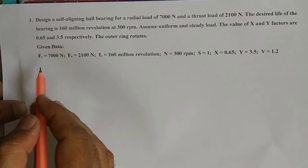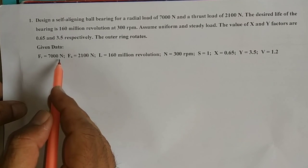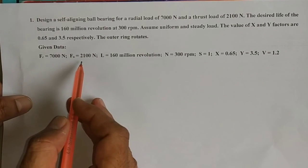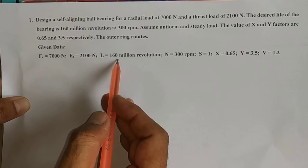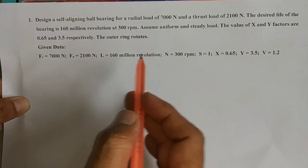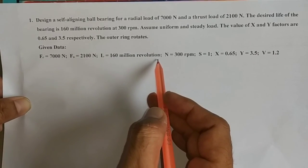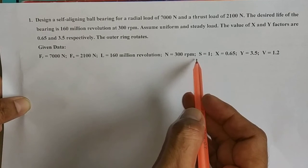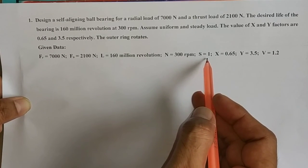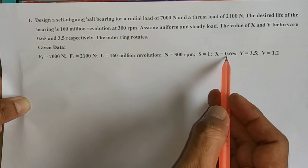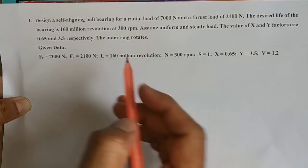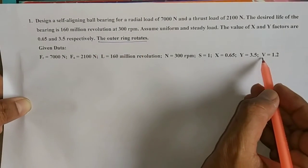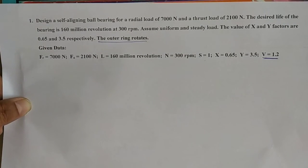Given data: radial load is 7000 Newton, axial load Fa is 2100 Newton, life L is 160 million revolutions, speed is 300 RPM, service factor S is equal to 1, X factor is 0.65, Y factor is 3.5. Since the outer ring rotates, V factor is equal to 1.2.